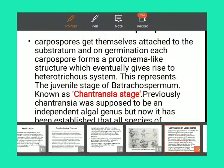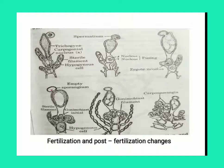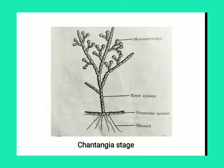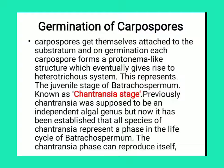The carpospores are developed after post-fertilization change. The carpospores further germinate into the heterotrichous system — the prostrate system and the erect system. This heterotrichous system represents the juvenile stage, meaning the young stage of Batrachospermum, and this stage is known as the Chantransia stage. The Chantransia stage is important for one-mark or two-mark exam questions. Previously, Chantransia was supposed to be an independent algae genus, but it has now been established that all species of Chantransia represent a phase in the life cycle of Batrachospermum.